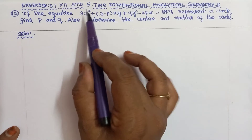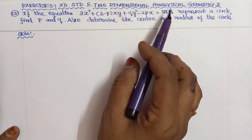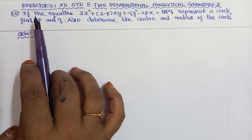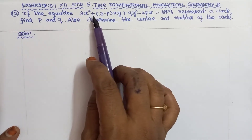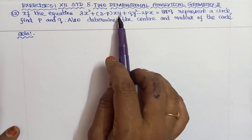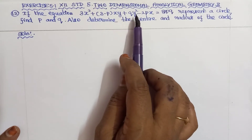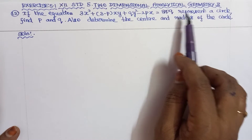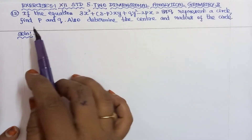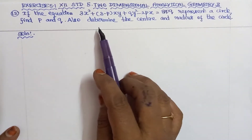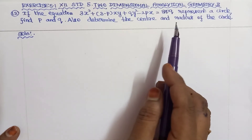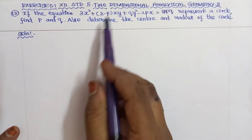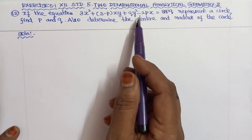Good morning to everyone. 12th standard, 5th chapter, 2-dimensional analytical geometry, Exercise 5.1, problem 12. If the equation 3x² + (3 - p)xy + qy² - 2px = 8pq represents a circle, find p and q. Also determine the center and radius of the circle.